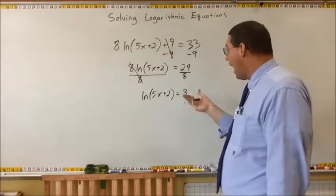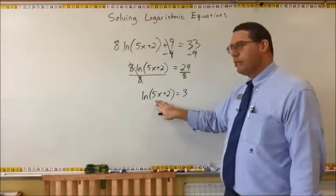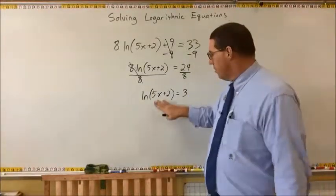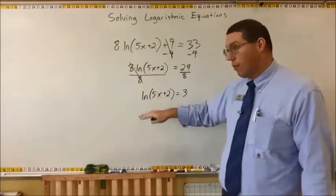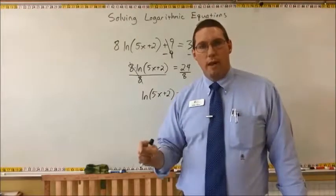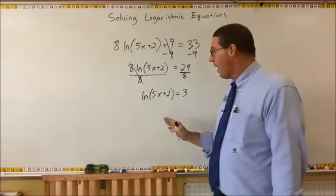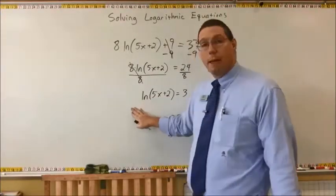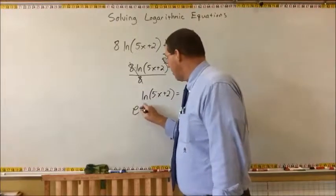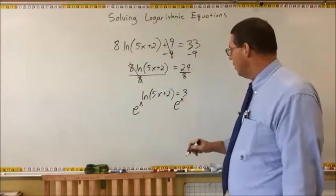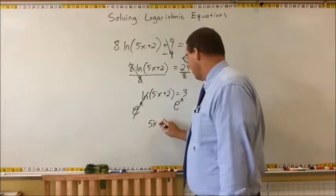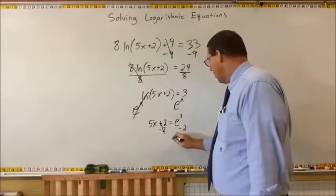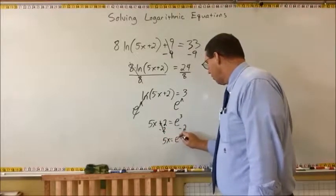Now we're at the point where the only thing on this side is the logarithm. Once the logarithm is alone on one side of the equation, we can cancel it with an exponential base. The base of the natural log is e, so we apply e to the power of on both sides. We cancel the natural log, and now we have 5x plus 2 is equal to e to the power of 3. So subtracting 2 from both sides gives 5x is equal to e to the third power minus 2.